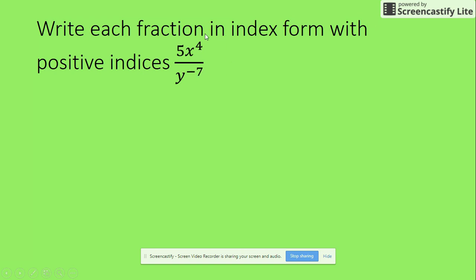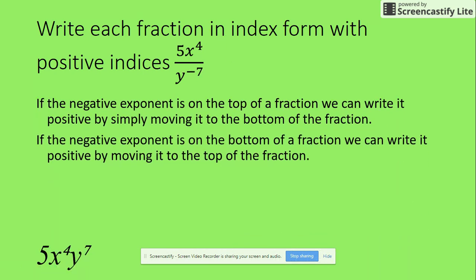Now we're going to move that up to the top. So we've got our rule. And therefore it leaves the bottom as nothing, which you could put a 1 into it, which would just make it a whole anyway. So the answer is 5x^4*y^7.